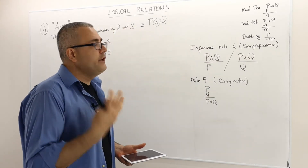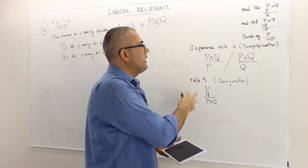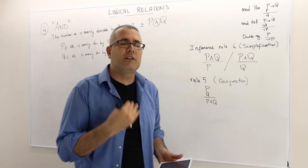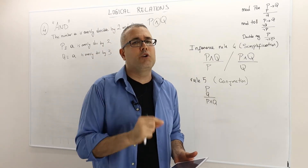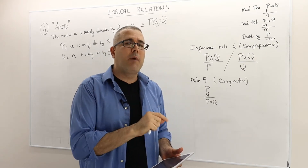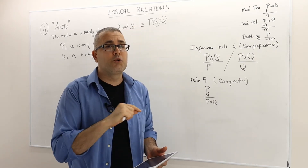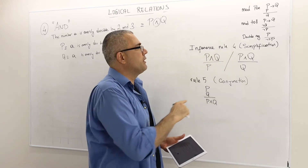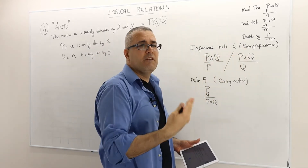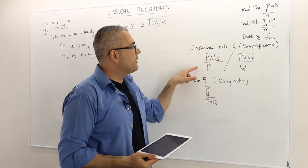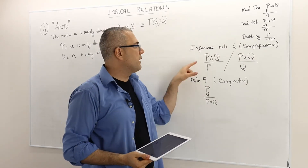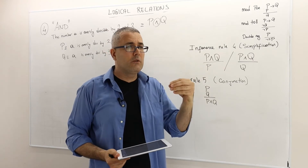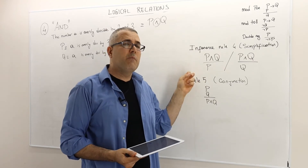This new symbol introduces a new set of inference rules. These are valid arguments — shorter arguments that you can prove by drawing truth tables. The first one is what we call simplification. The argument says: if the statement P and Q is true, then P must be true.